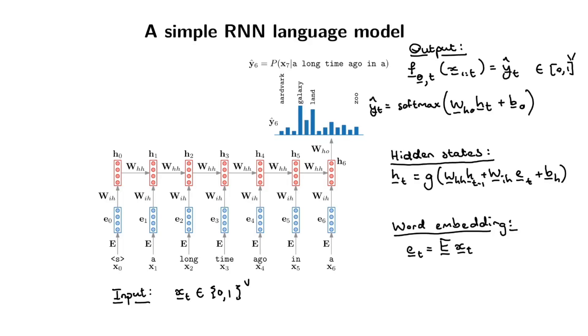That gives you the distribution, the predicted distribution for what happens at the next time step. In other words, this time step here at x7. That's what this output does. It says is this galaxy or is it land or is it kingdom or something like that.